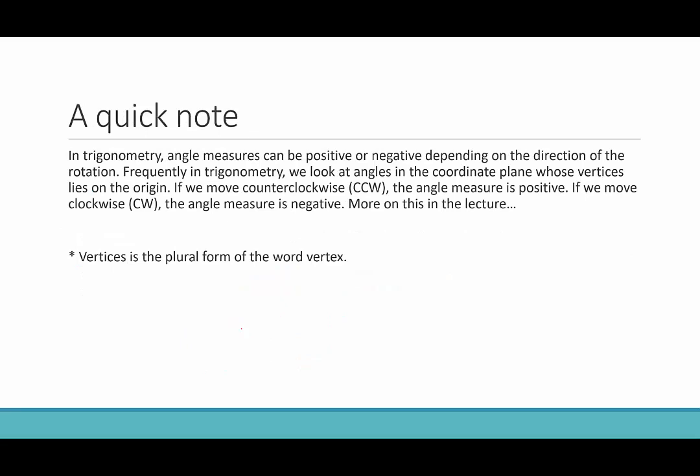So a quick note, and we're going to talk more about this in another lecture, but it's somewhat relevant here, so I figure I'll bring it up now, at least introduce it. In trigonometry, angle measures can be positive or negative depending on the direction of the rotation. Frequently in trigonometry, we look at angles in the coordinate plane whose vertices lie on the origin. So here's the coordinate plane, and we think of angles whose vertex, so I put down here vertices, is the plural of the word vertex. So it sounds a little weird.